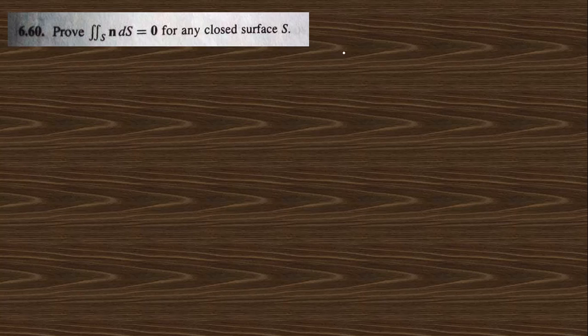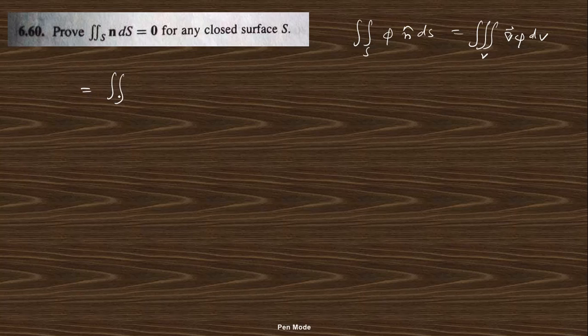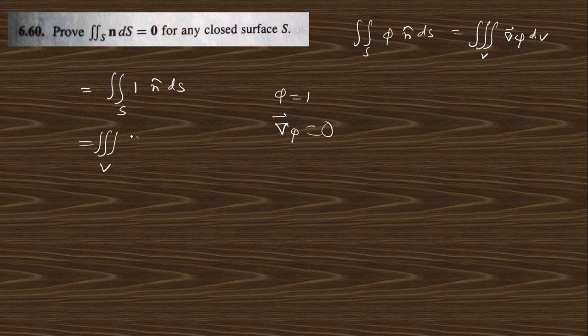Go to the next one: prove that this integral is 0. For that, remember the same identity: surface integral of φ n̂ dS equals volume integral of grad φ dV. Here φ is nothing but 1, so we write 1 times n̂ dS. Since φ = 1, grad φ = grad(1) = 0. So the volume integral of grad(1) dV = 0, and therefore the surface integral also becomes 0 — hence proved.